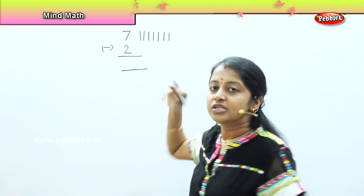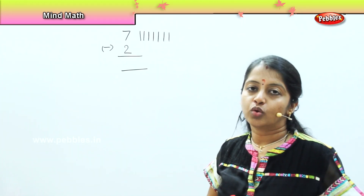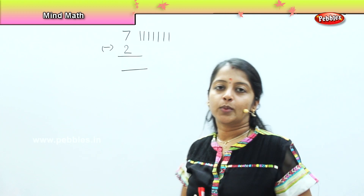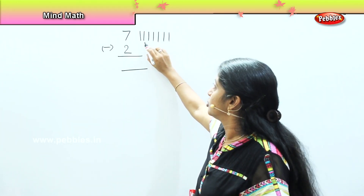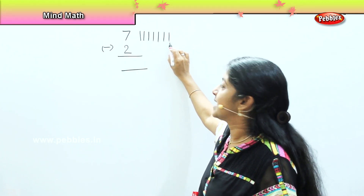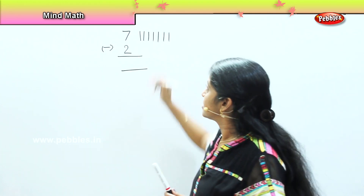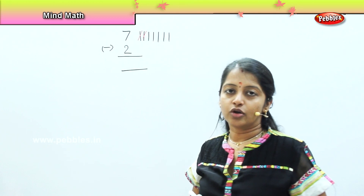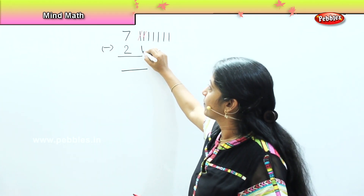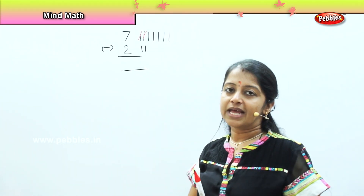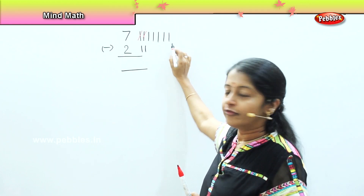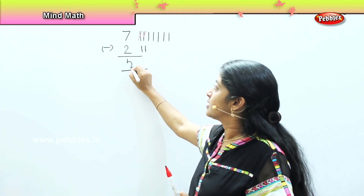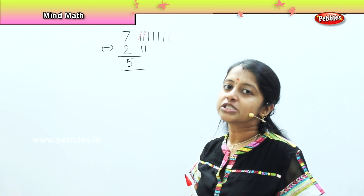We can do it with either the striking method or the beads method. I am doing it with the striking method, so I will draw here seven lines: one, two, three, four, five, six, and seven. Now Pari was very hungry and she ate two bananas, so I strike off two. What is the balance left with her? Let's count: one, two, three, four, and five.